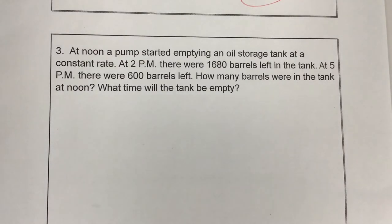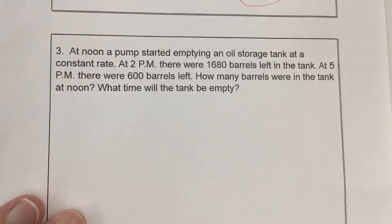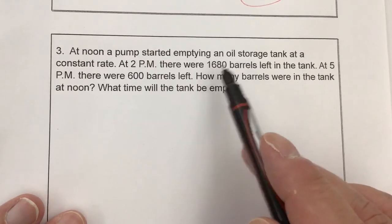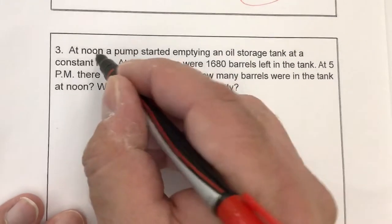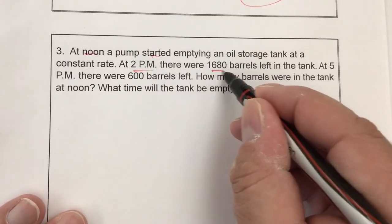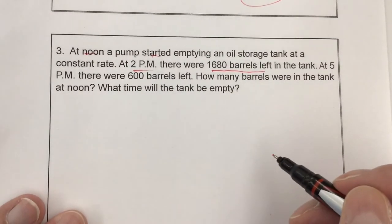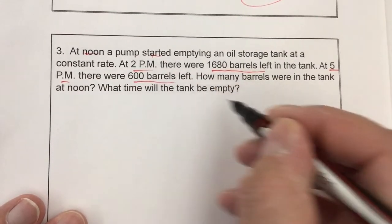At noon, a pump started emptying an oil storage tank at a constant rate. So I know it's emptying at a constant rate, so I have an idea that that's going to be my slope. Because remember, slope is a rate of change. So it started at noon. At 2 p.m., there was 1,680 barrels left. At 5 p.m., there was 600 barrels left.